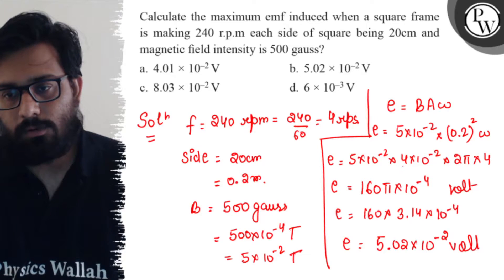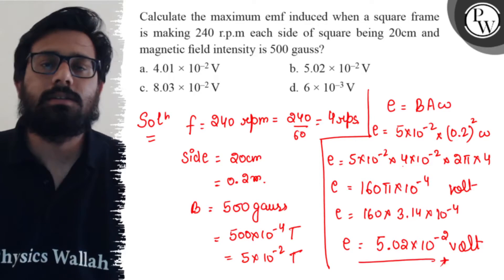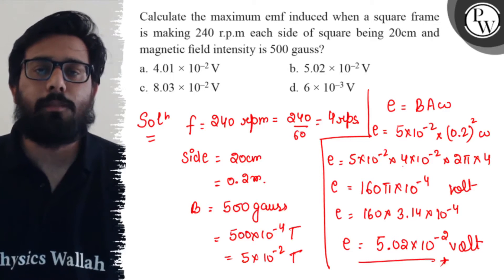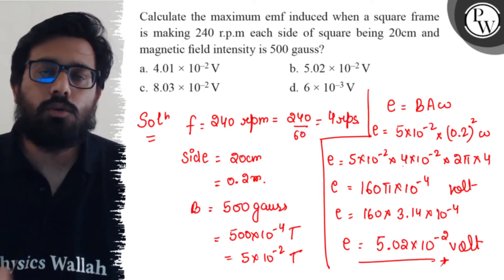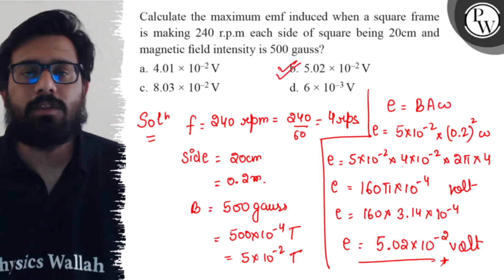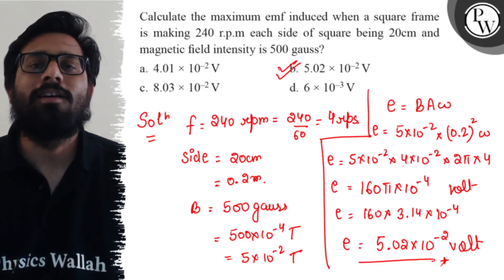It's all about the calculation now. Calculate this and you will get your final answer as 5.02 × 10^-2 volt, which is your B option. So I hope the concept of this question is clear now. All the very best.